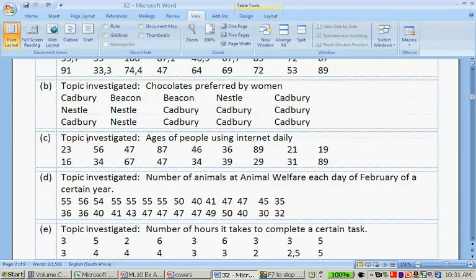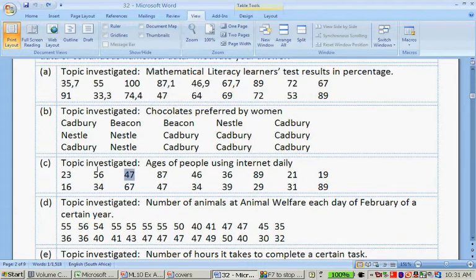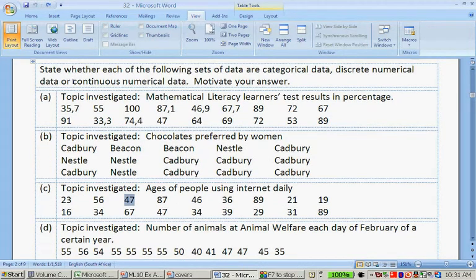Question C. Ages of people using internet daily: 23, 56, 47, etc. Because somebody can be 56 and a half, this would be continuous numerical data.